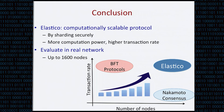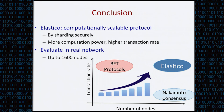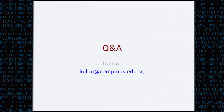In conclusion, we introduced Elastico, which scales up the generation rate almost linearly to the computation power in the network. Our solution is based on sharding in open networks. We evaluated Elastico in a real network by running up to 1,600 nodes. With that, I conclude my presentation and I am happy to take questions.